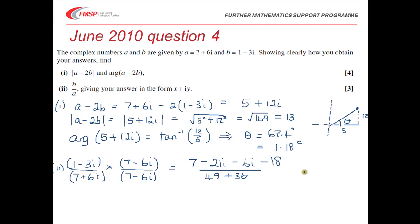So you end up, it doesn't look very nice, but you end up with, on the top line, you have minus 11, minus 27i. In the denominator, you have 85. And just reading the question carefully, it does say to give your answer in the form x plus iy. So we'll write it as minus 11 over 85, minus 27 over 85i.